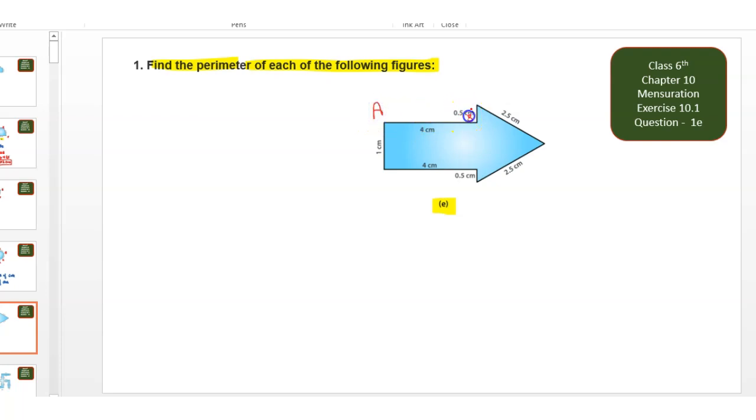1, A, B, C, D, E, F. So first side AB is equal to 0.5 cm. BC, AB is 4 cm. BC is equal to 0.5 cm. This one. And CD is equal to 2.5 cm.